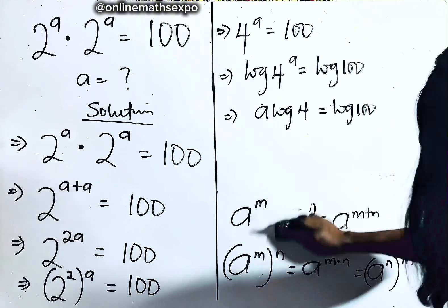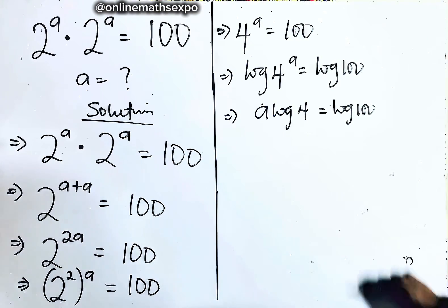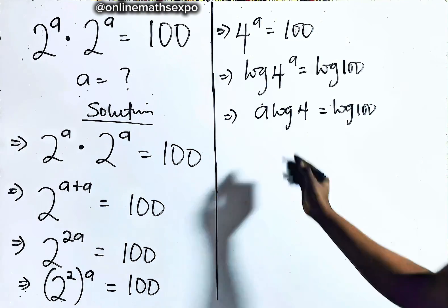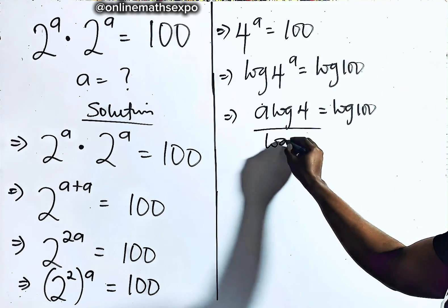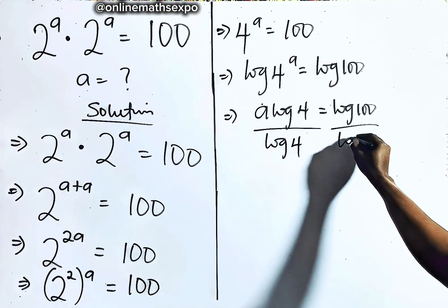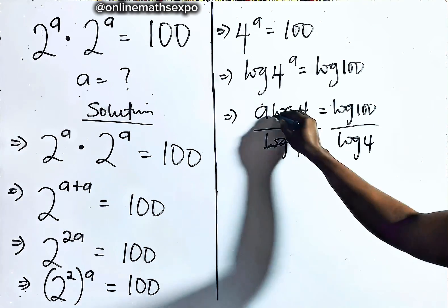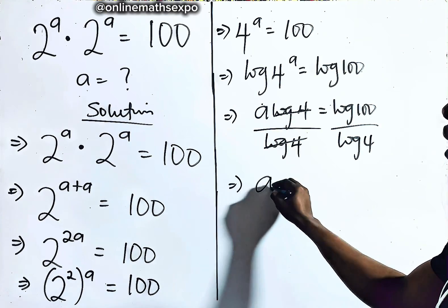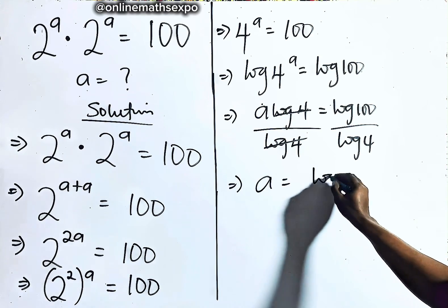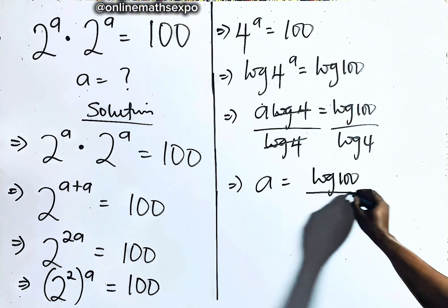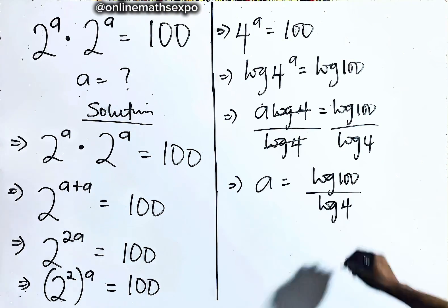So we keep solving. To get a, divide both sides by log of 4. This gives us a is equal to log of 100 divided by log of 4.